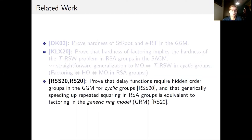Rotem, Segev, and Shahaf proved that delay functions require hidden order groups in the generic group model for cyclic groups, and that generically speeding up repeated squaring in RSA groups is equivalent to factoring in the generic ring model. Since those results are in the generic group and ring models, their techniques are incomparable to ours.